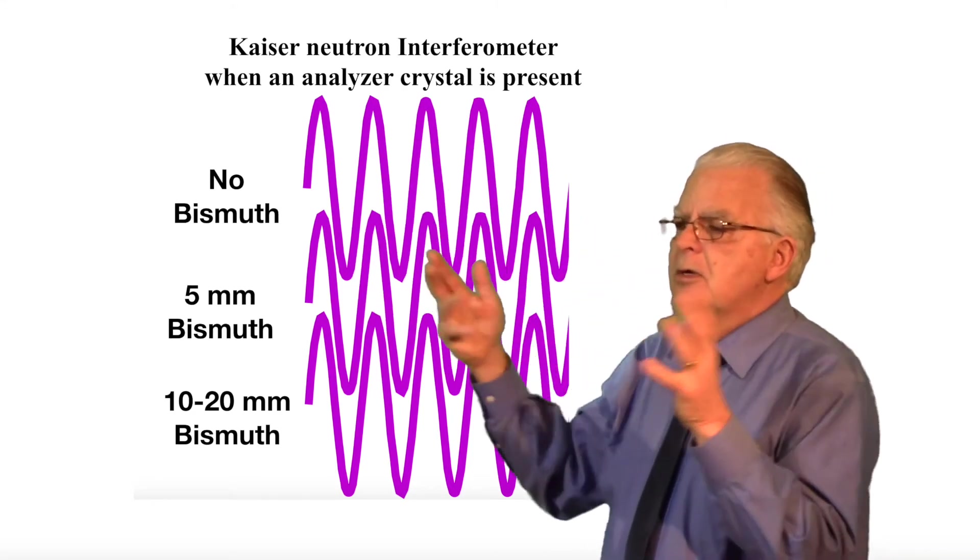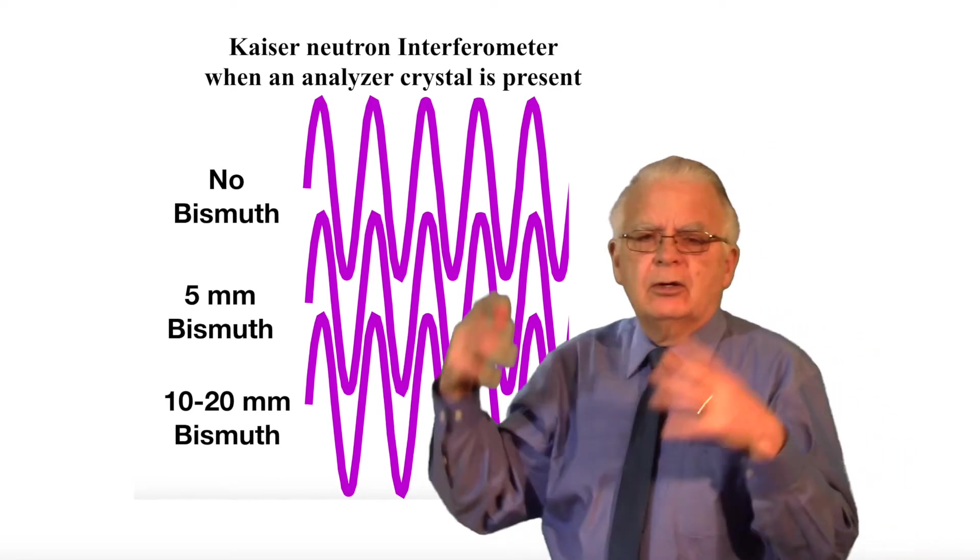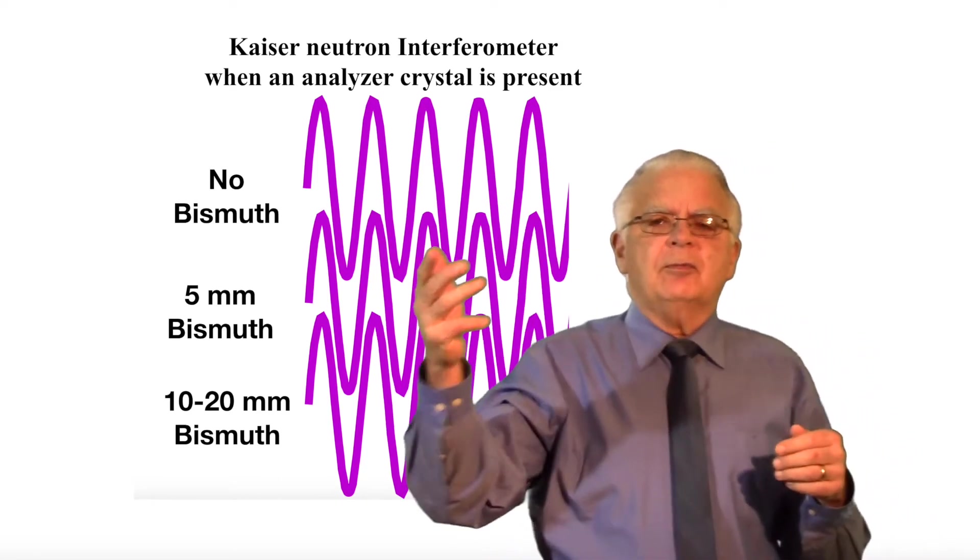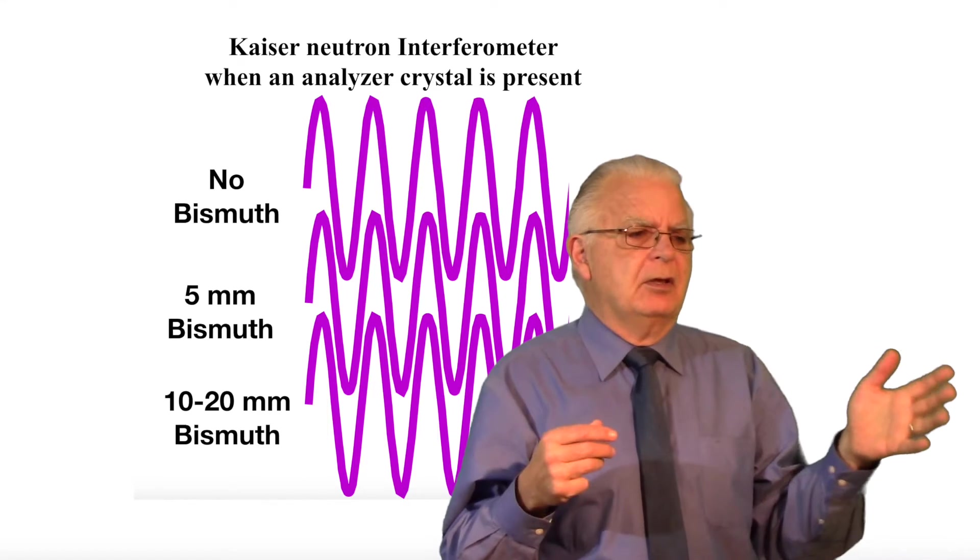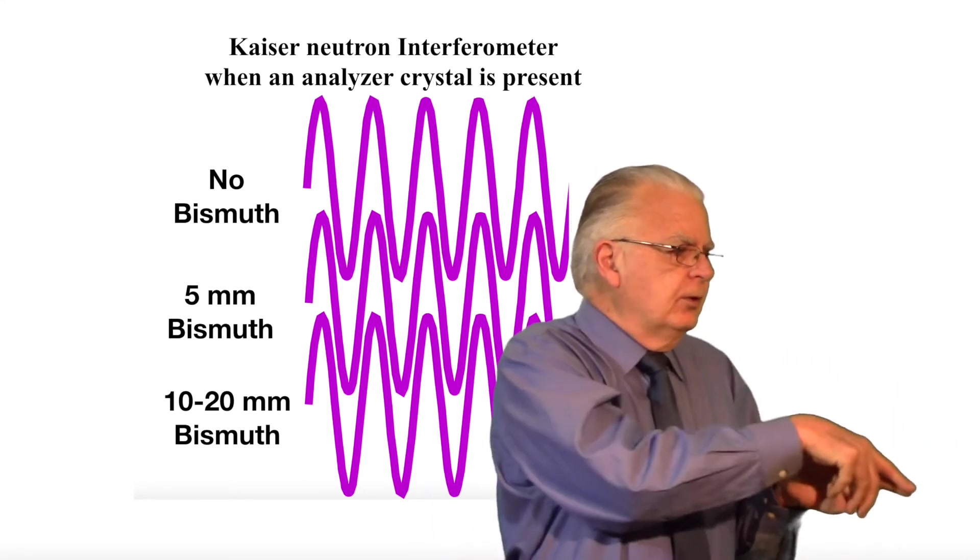To everyone's astonishment, inserting that analyzer crystal down there outside the interferometer downstream restored robust interference upstream inside the interferometer, which made no sense. They couldn't explain it. They said quantum mechanics cannot explain this because the waves and particles are going in the same direction. However, in our elementary wave model we can easily explain it.